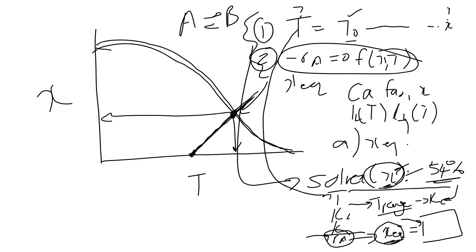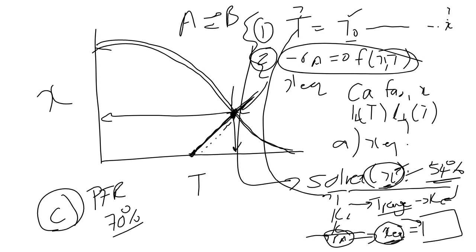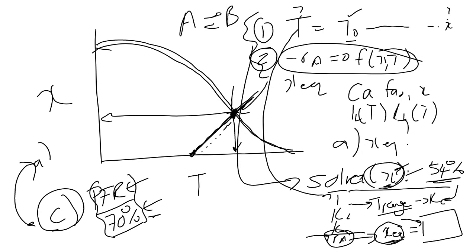You can also construct your adiabatic energy balance to show the limit for any reactor. Regarding question (c): if I give you an adiabatic CSTR and ask for 70 percent conversion, I am being extremely mean, because the answer is that it is impossible — you are asking me to break the rules of thermodynamics. Questions (a) and (c) are linked because of this equilibrium limitation.